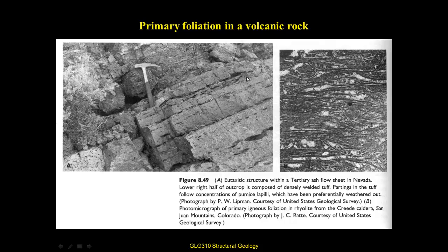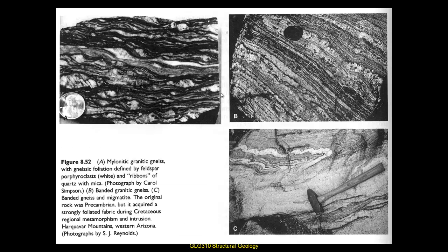Here's primary foliation in a volcanic igneous rock, but as discussed at the beginning of the class, that's a primary structure. We really study secondary structures, so we might look at the deformation of primary foliation. Here are primary foliations with planar structures in gneisses and schists, defined by compositional layering that develops in heavy metamorphism. We can also see a very nice mylonite, something like we might see at the top of the South Mountains, and a zone of foliation that was subsequently folded and perhaps melted.